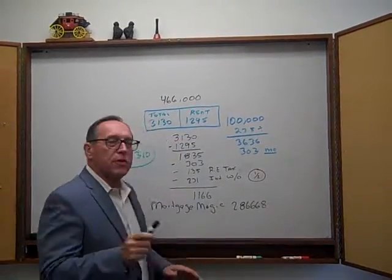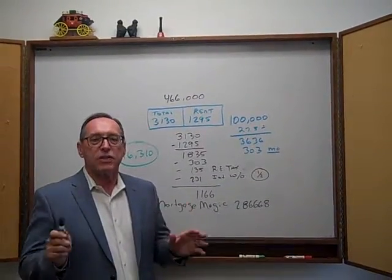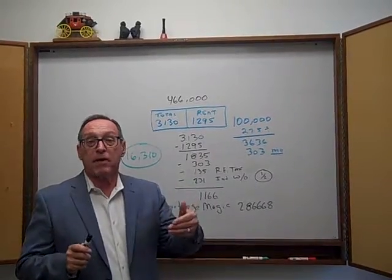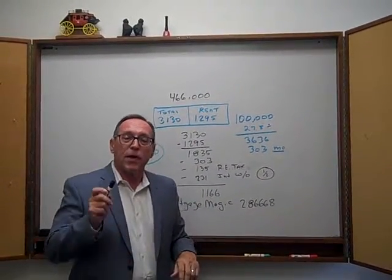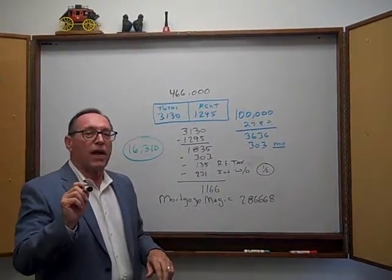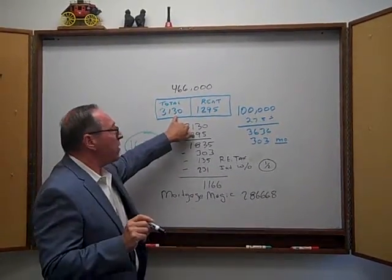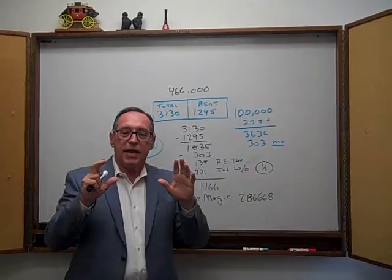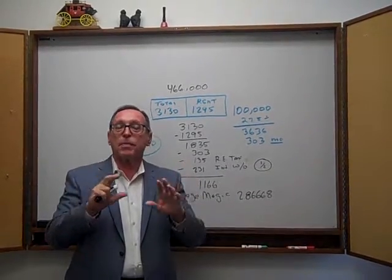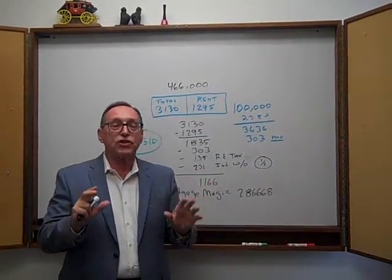Let me show you why. You can purchase a very nice duplex in the Sacramento Carmichael area for $466,000. The total payment on that is only $3,030. That's with the taxes, insurance, mortgage payment, and mortgage insurance.